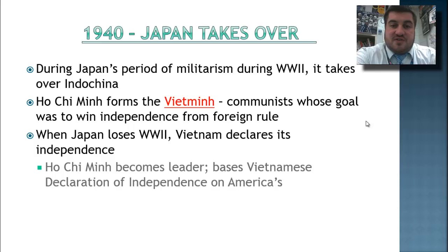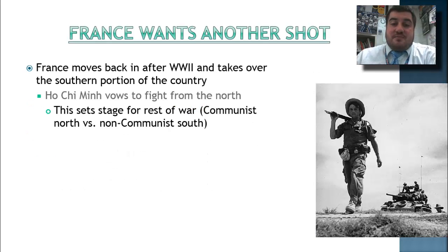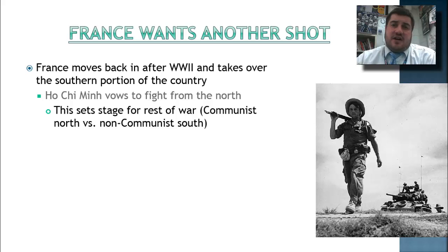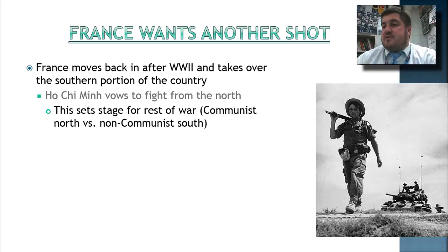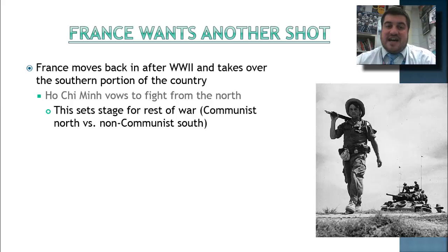When Japan loses World War II, Vietnam goes ahead and declares its independence, and Ho Chi Minh is made their leader. But France isn't so sure about that. France wants another shot, so they move back in after World War II and say they had this land colonized before Japan took it over, so they should have it back. They move back in and take over the southern portion of the country, which the U.S. supported, setting the stage for the rest of the war — a communist north versus a non-communist south.